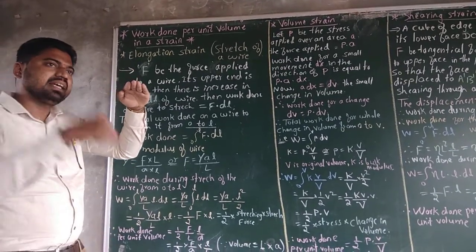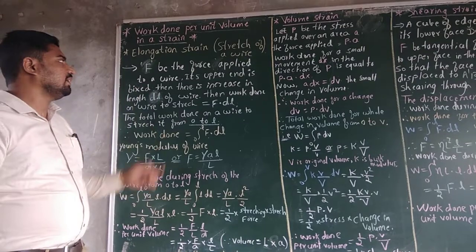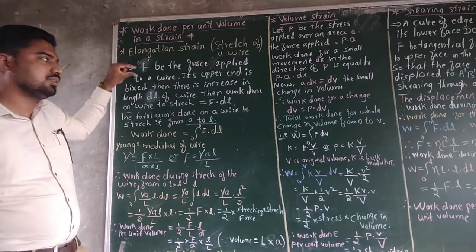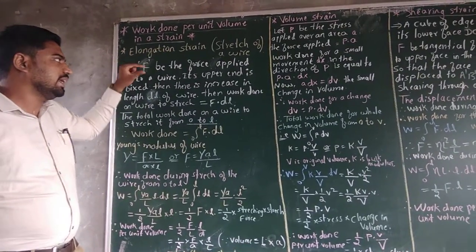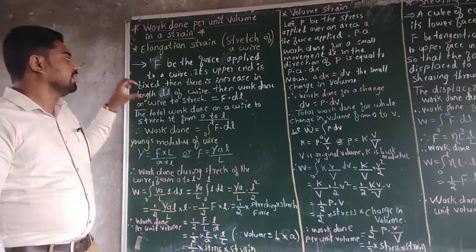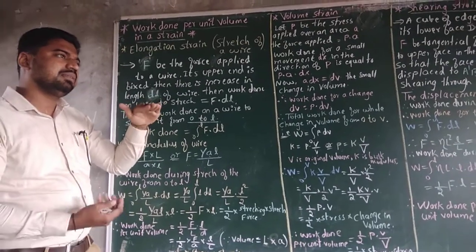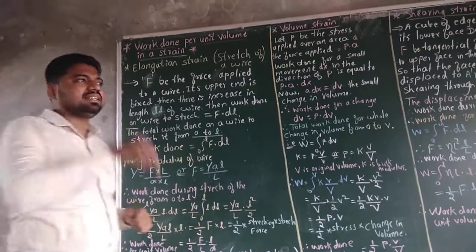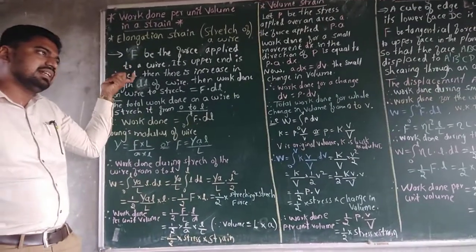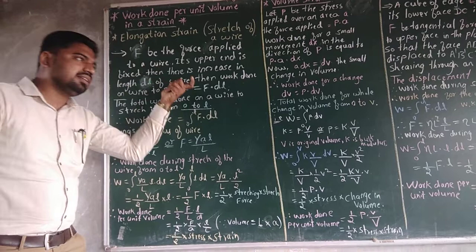You take F as the force applied to the wire. Its upper end is fixed and there is a change in the length of the wire when you apply the external force. That change in length, or increase in length, you take as DL.